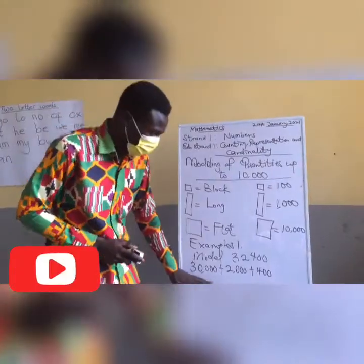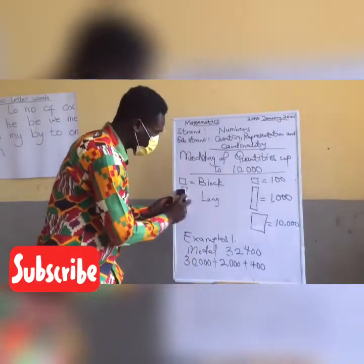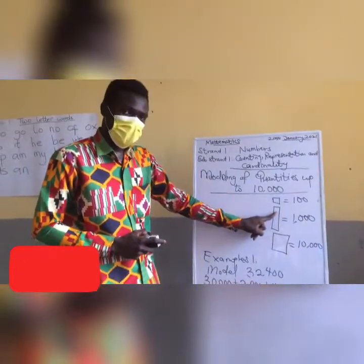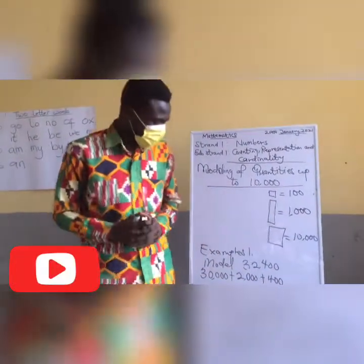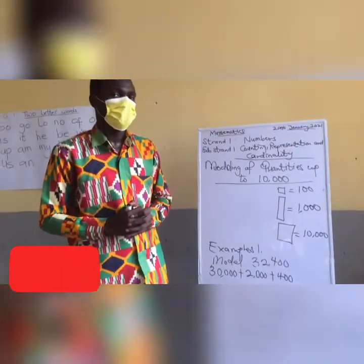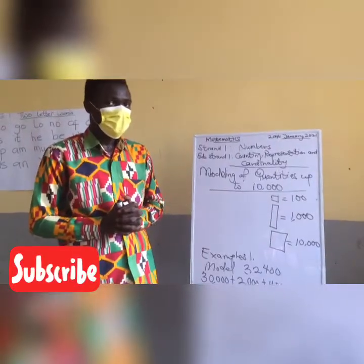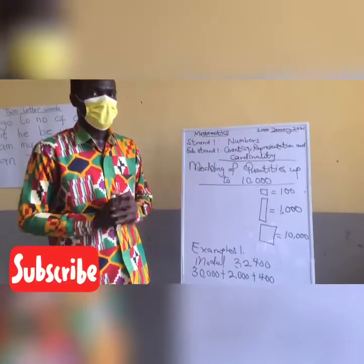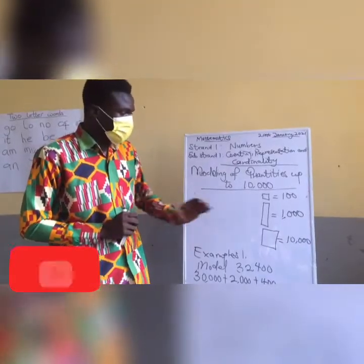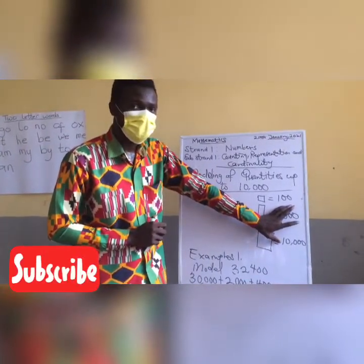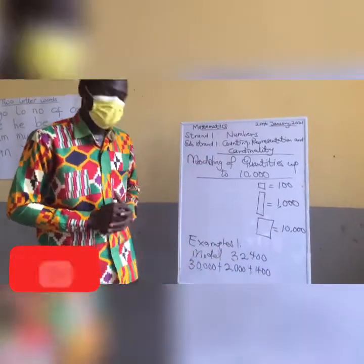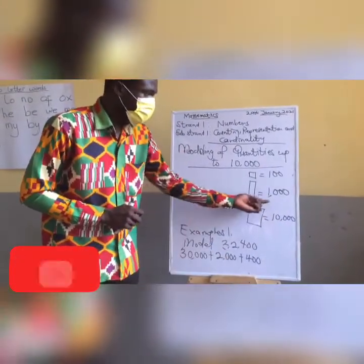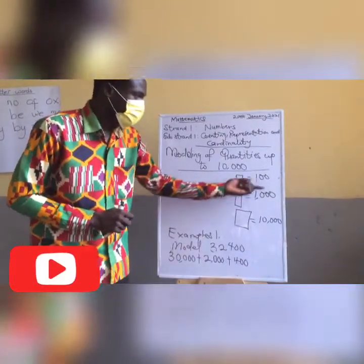Now let's look at how we can model this given quantity. One of these is a block, this is a long, and this is a flat. The 30,000 goes with the flat (10,000), the 2,000 goes with the long (1,000), and the 400 goes with the block (100). Starting from 30,000: if one flat is 10,000, then 30,000 will give us three flats.